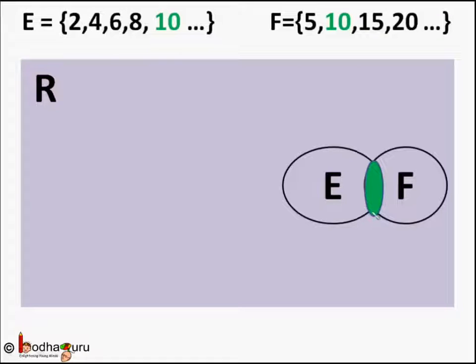Now, there are some elements common in E and F. Those elements are there at the common part at the intersection of the two circles as shown in the green part. Say, those elements make a set L.